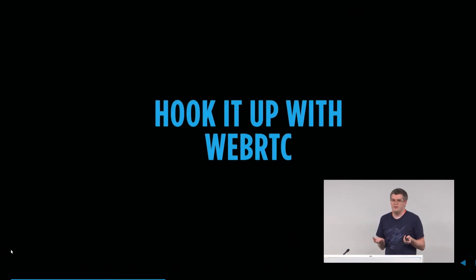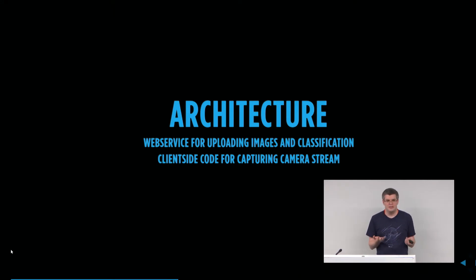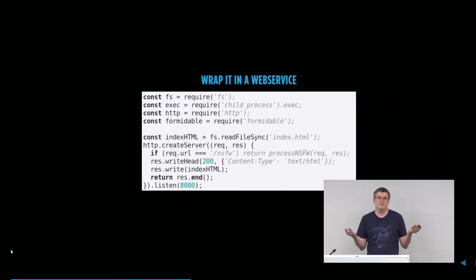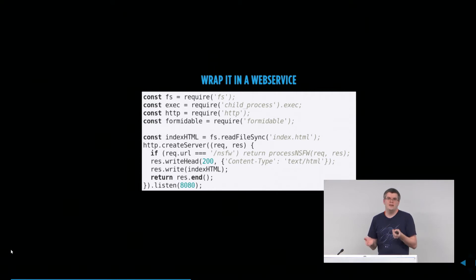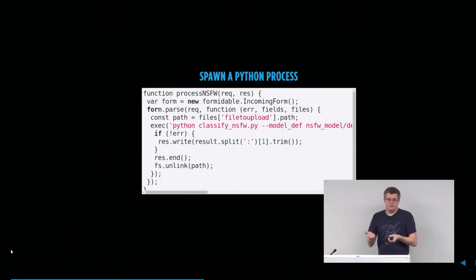So how can you hook it up with WebRTC? You need two things: first, a web service for uploading images and classifying them; and second, some client-side code for capturing an image from the video stream. The web service part is pretty easy — if you write it in Node.js, it's 10 to 12 lines. You require a bunch of packages, create an HTTP server, and if the request URL matches, you classify the image by spawning a Python process, serve the result, and delete the file.